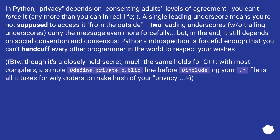In Python, privacy depends on consenting adults' levels of agreement — you can't force it, any more than you can in real life. A single leading underscore means you're not supposed to access it from the outside. Two leading underscores, with no trailing underscores, carry the message even more forcefully. But in the end, it still depends on social convention and consensus. Python's introspection is forceful enough that you can't handcuff every other programmer in the world to respect your wishes.